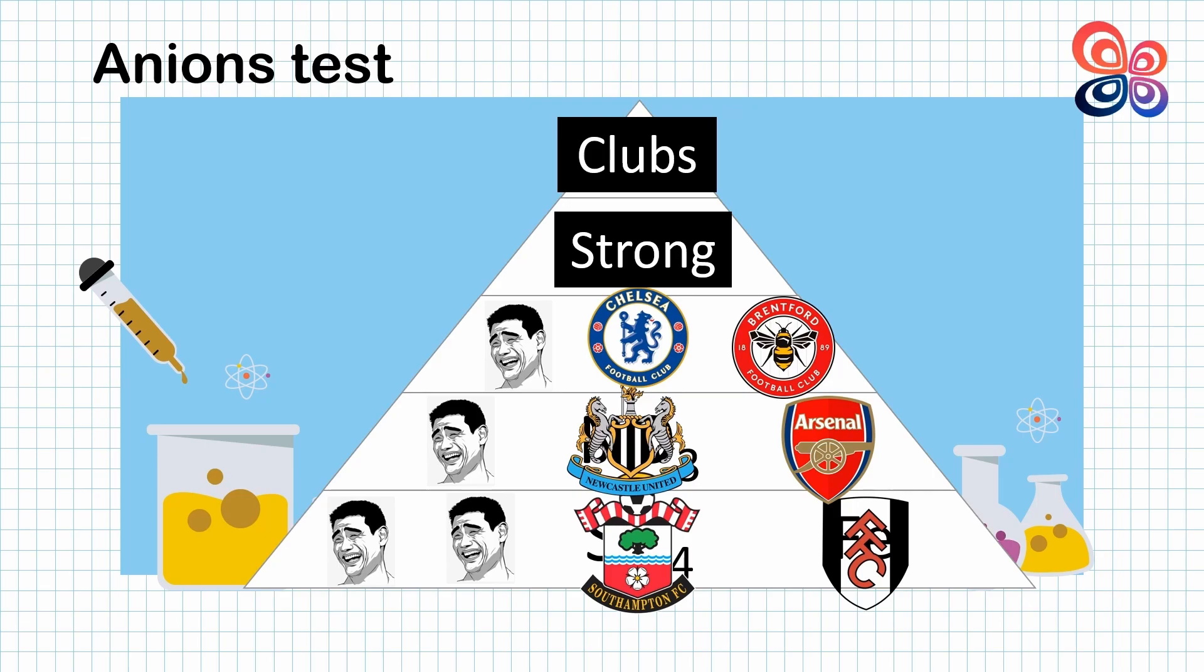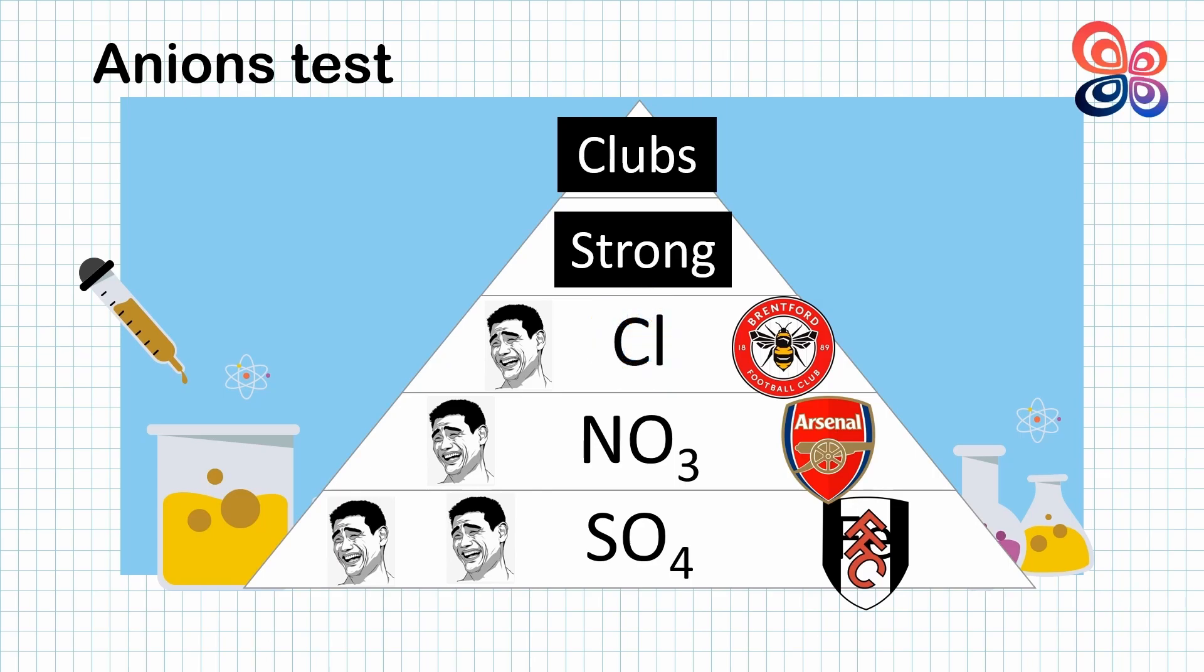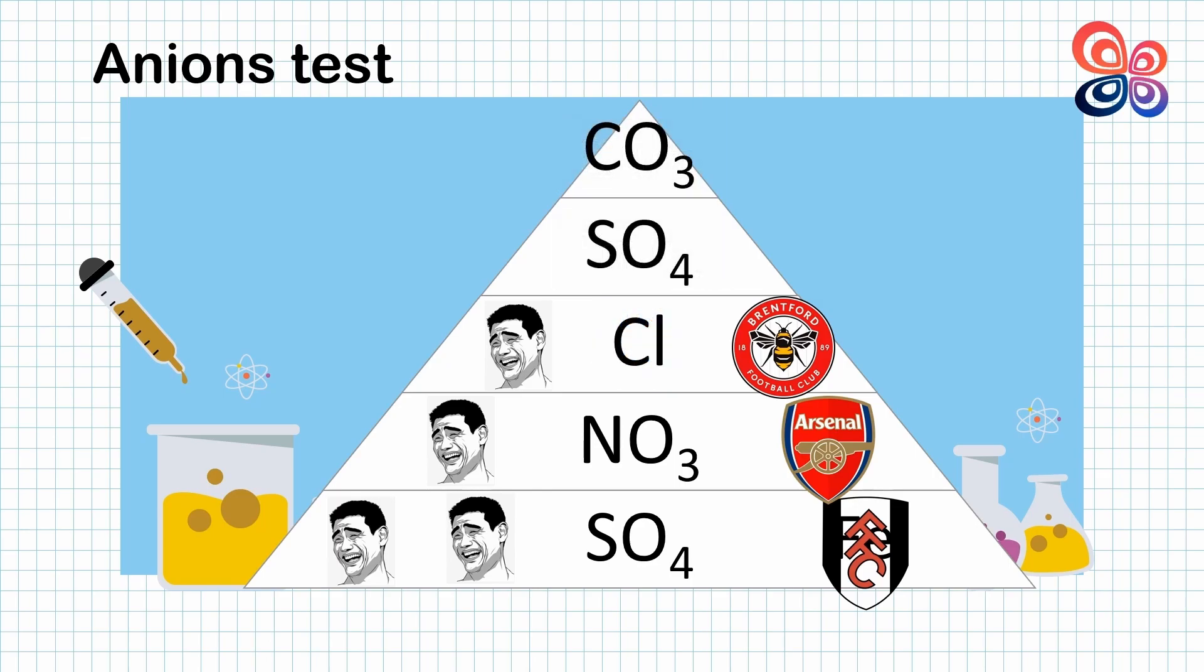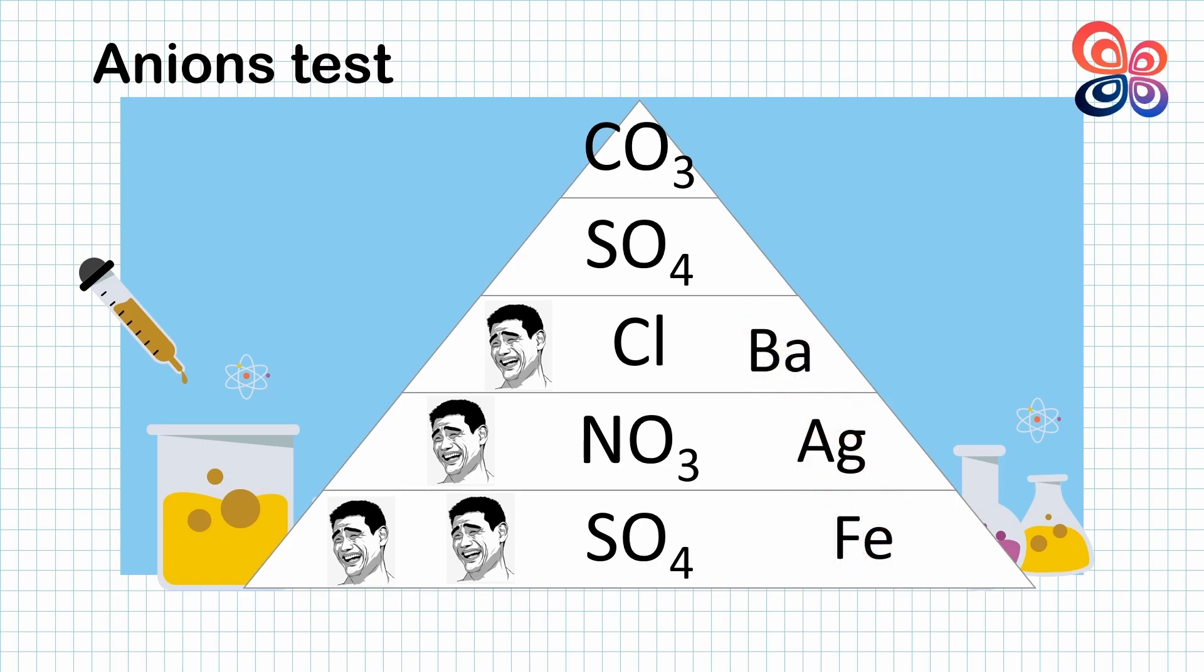Southampton represents sulfate, Newcastle shows nitrate, Chelsea represents chloride, followed by sulfate and carbonate. For the right side, starting from the bottom is iron, silver and barium. The left side, all is hydrogen.